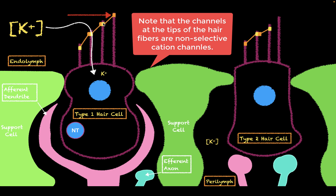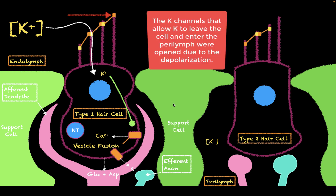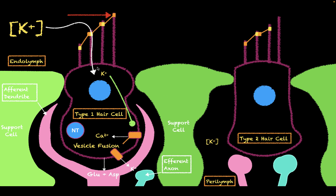When potassium moves into the cell, this causes a depolarization which opens voltage-gated calcium channels, allowing vesicular fusion to take place. When vesicular fusion takes place, the neurotransmitters aspartate and glutamate are released onto the afferent dendrite. The potassium that entered the cell then leaves through potassium channels and enters into the perilymph, going down its electrochemical gradient.